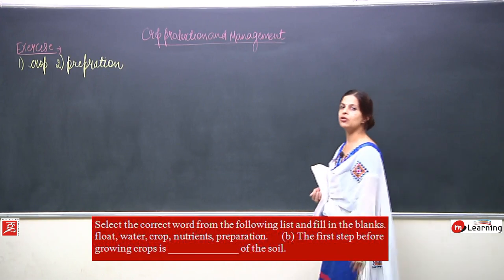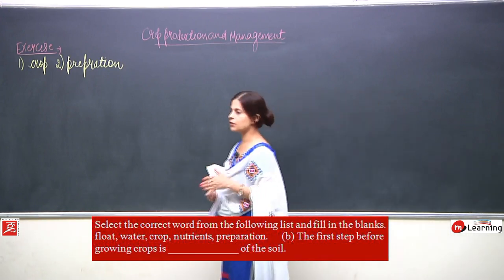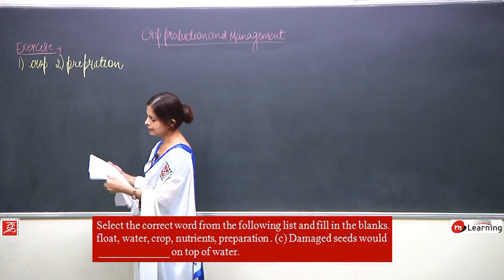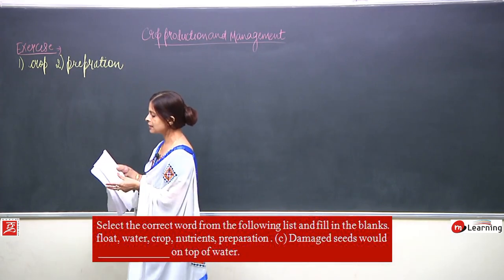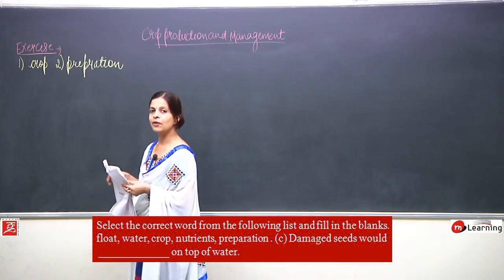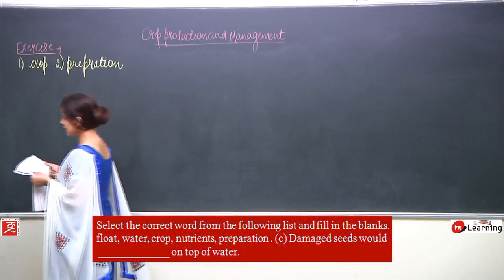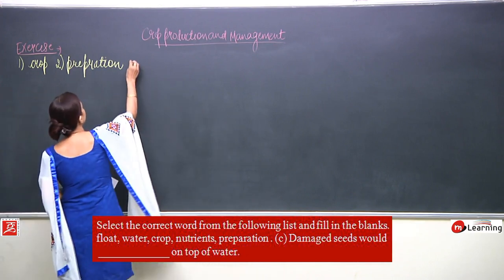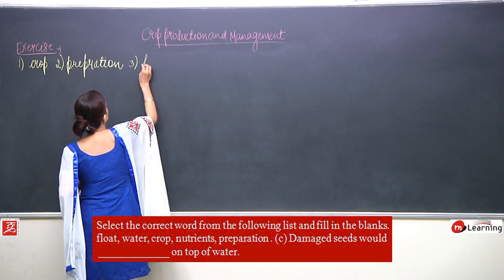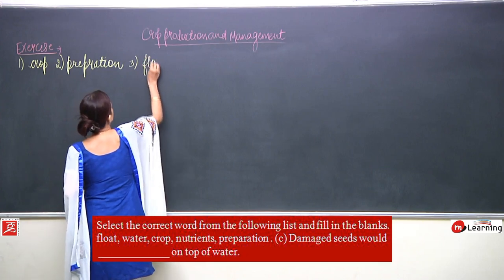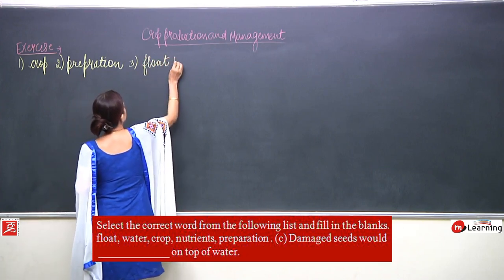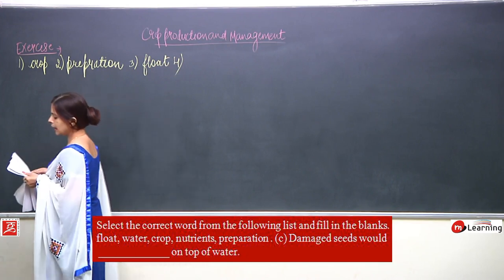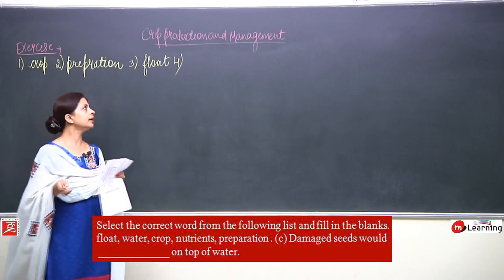So the seeds which are not good will float on the surface of the water. Therefore, the answer is: damaged seeds would float.